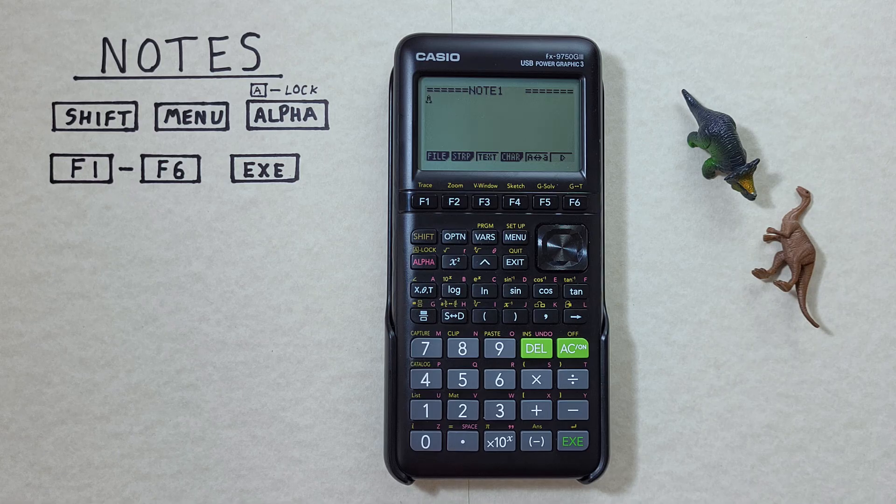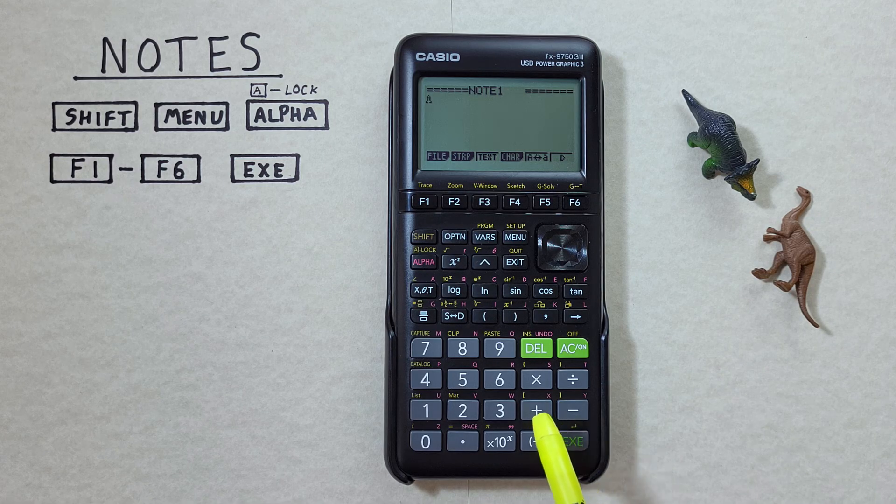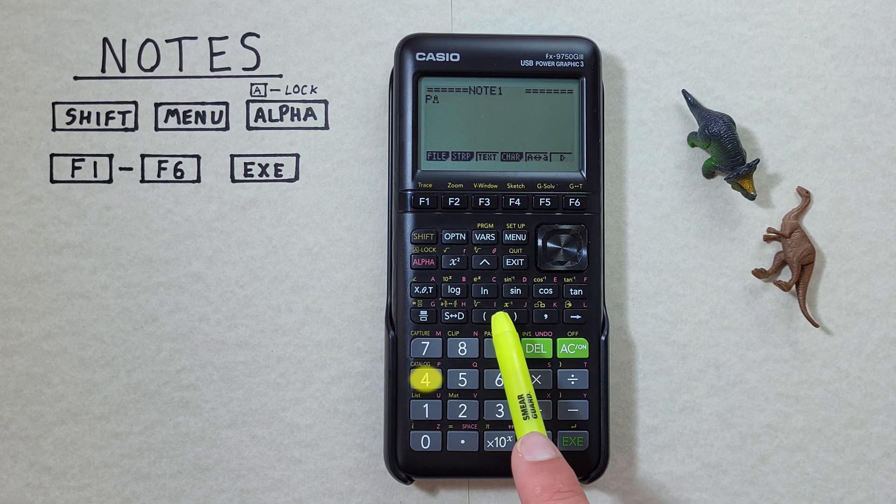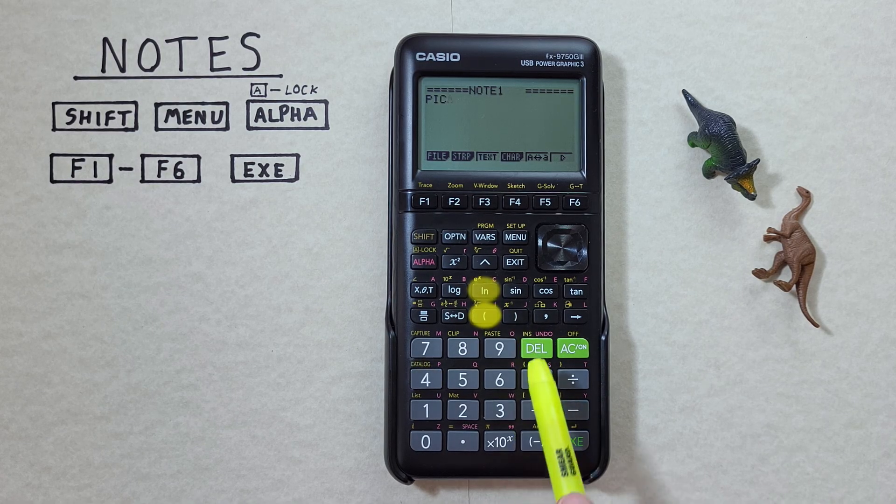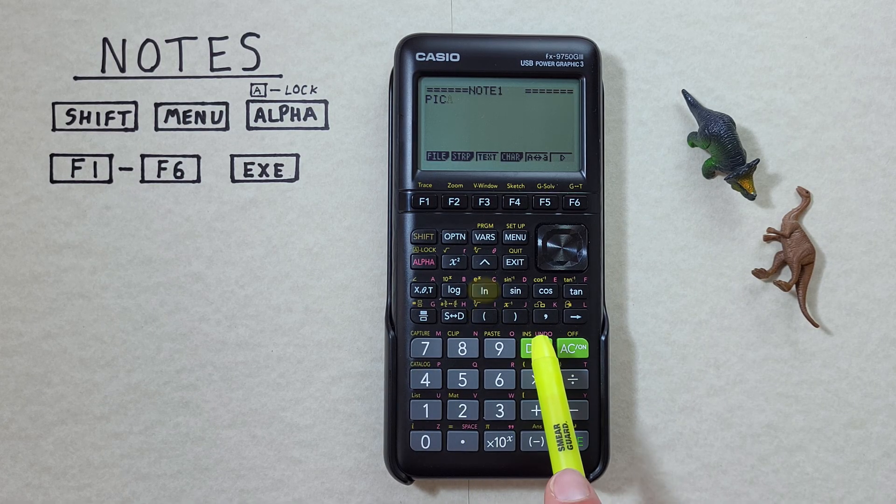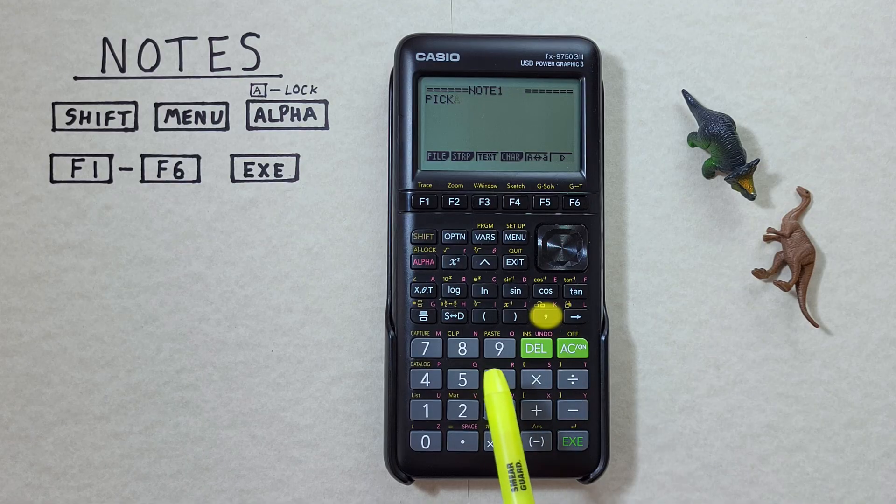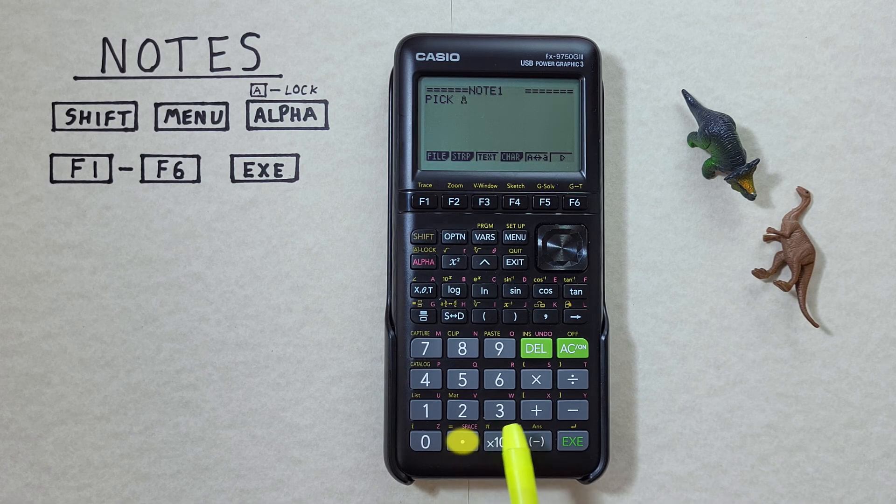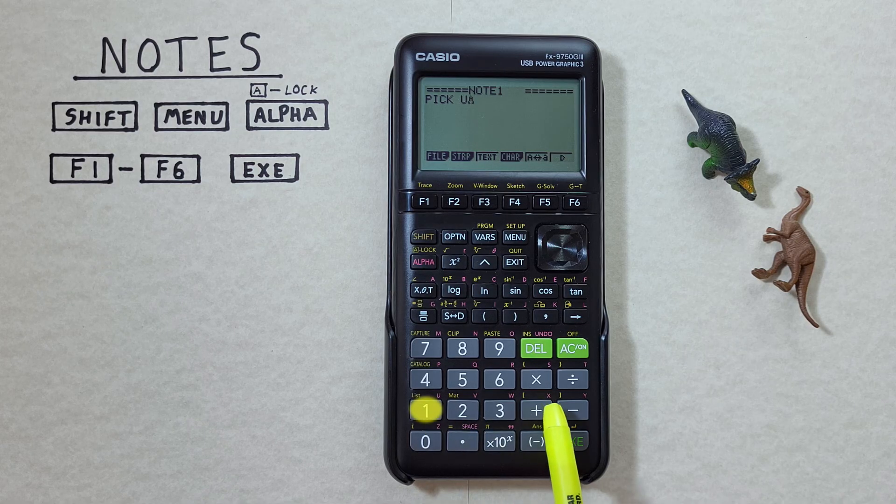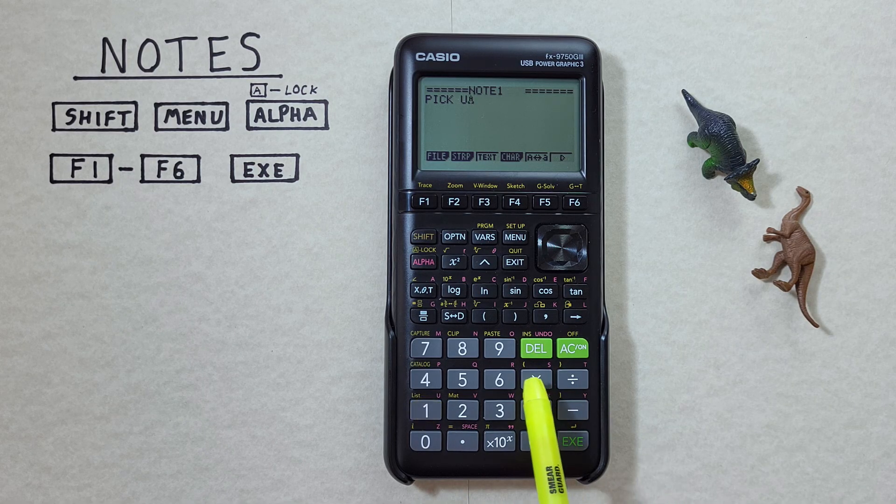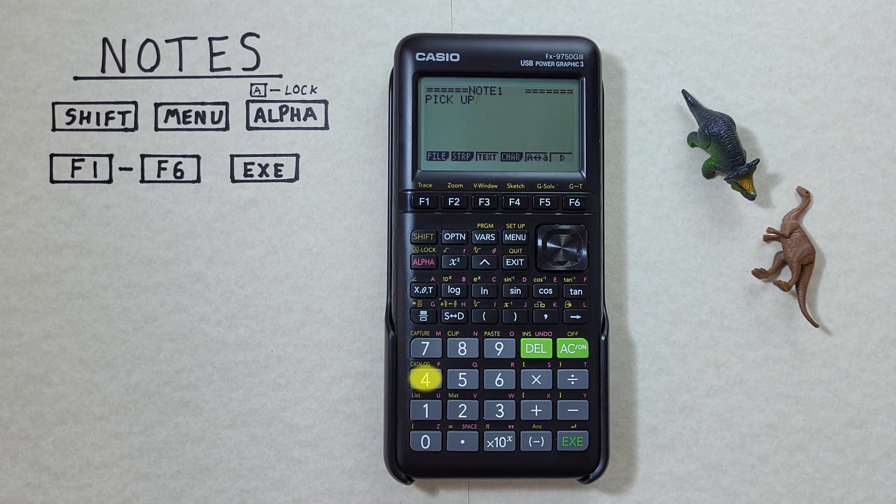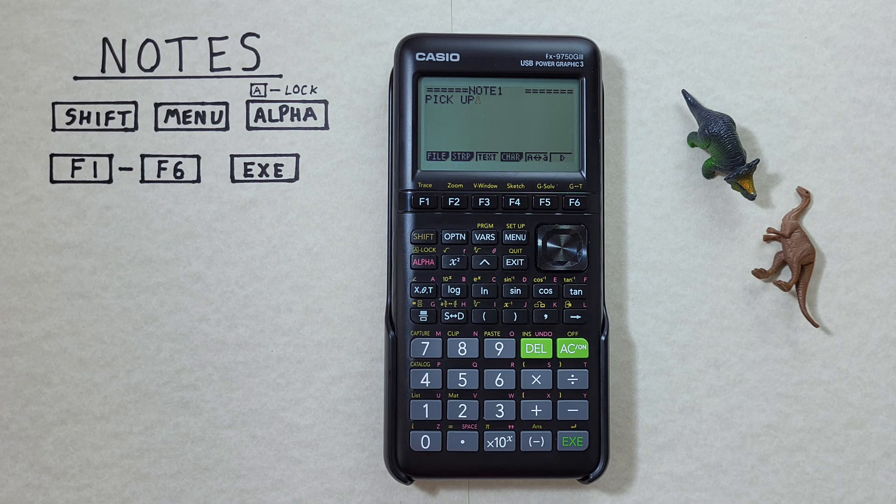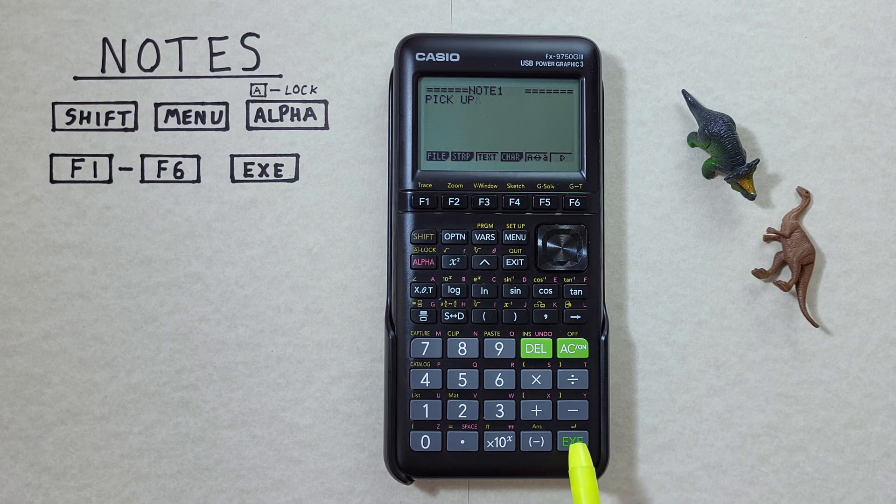We'll start with our reminder. So if we want to pick up a few things we start with writing in pick. And then we need to enter a space which is down here with the decimal. Up. Alright. There's our first line. Now we'll list what we need to get. To go down to the next line press the EXE.